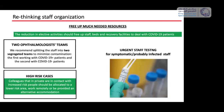Regarding staff organization, the aim is to free up much-needed resources. We are splitting the staff into two segregated teams to minimize contamination — one working with COVID-positive patients and one working with COVID-negative patients. They don't meet each other and have different entrances, like being in two different hospitals. Colleagues who are at increased risk should be allocated to a low-risk area, working remotely or provided alternative accommodation, not going back home.